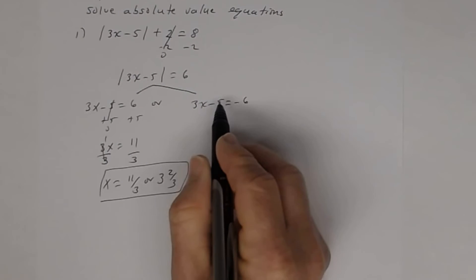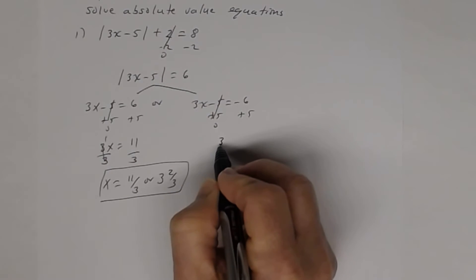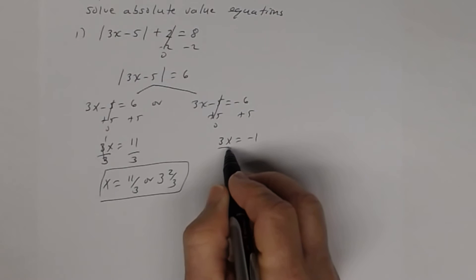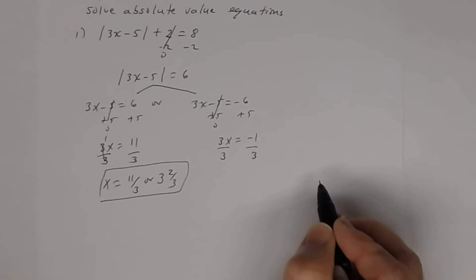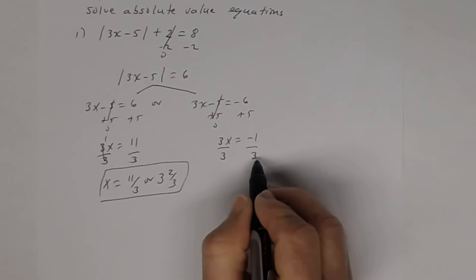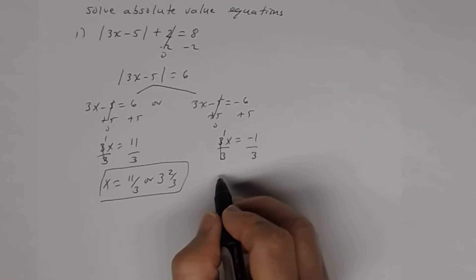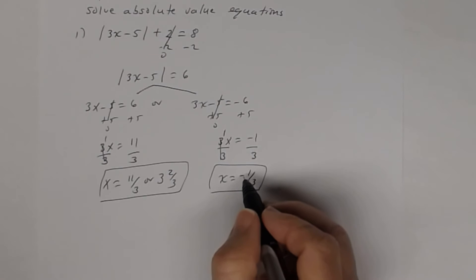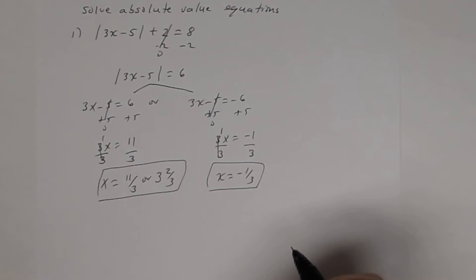For the second equation, add 5 to both sides and combine like terms: 3x equals negative 1. Divide both sides by 3 — remember, what you do to one side you do to the other. So x equals negative 1 third. You cannot write this as a mixed number because negative 1 third is a proper fraction, not an improper fraction.